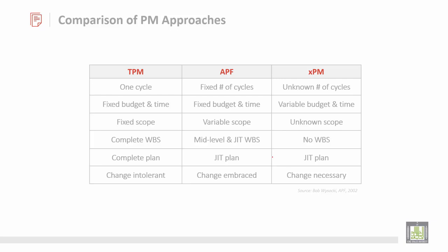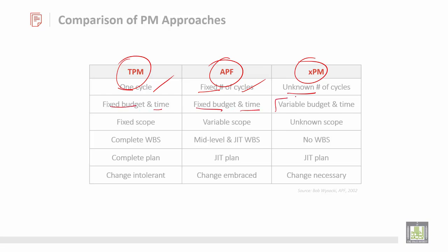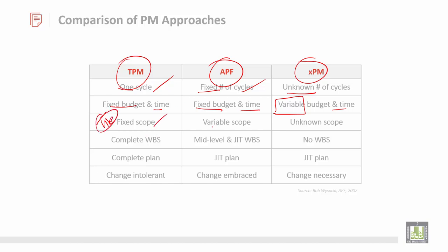For the comparison of various project management approaches, we have three important categories. Traditional Project Management involves one cycle, fixed. APF has unknown cycles. Regarding budget and time, Traditional PM has a fixed budget and time. APF also has a fixed budget but a variable budget in some aspects. XEM has a fixed time but a variable scope, while APF has an unknown scope.